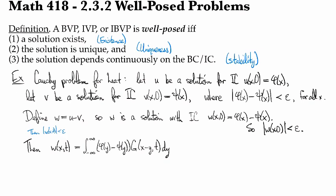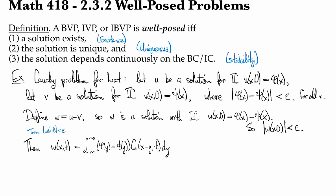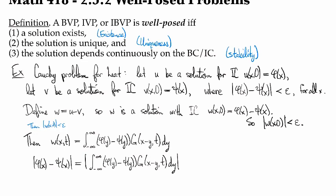So now for any value of t, on the left side we've got the absolute value of w. I'm going to take the absolute value of each side. So the absolute value of w is the absolute value of u minus v. And then on the right-hand side, I have the absolute value of this integral.